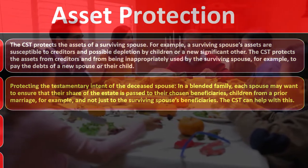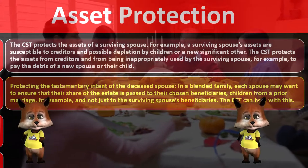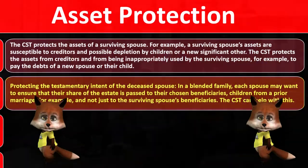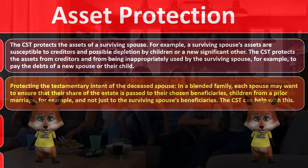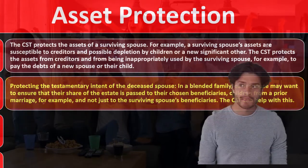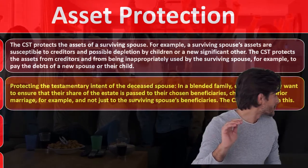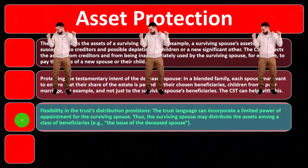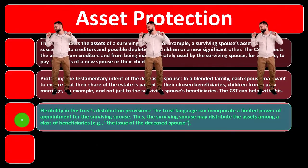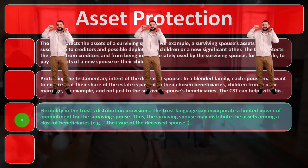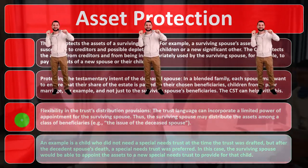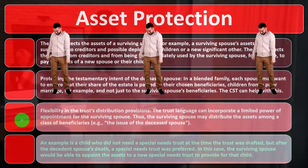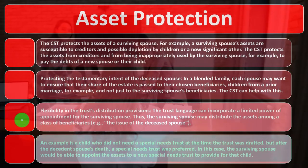The CST also protects the testamentary intent of the deceased spouse. In a blended family, each spouse may want to ensure their share of the estate passes to their chosen beneficiaries — such as children from a prior marriage — rather than just to the surviving spouse's beneficiaries. The trust can help with this. Additionally, flexibility in trust distribution provisions allows the trust language to incorporate a limited power of appointment for the surviving spouse to distribute assets among a class of beneficiaries, such as a child who later needs a special needs trust.